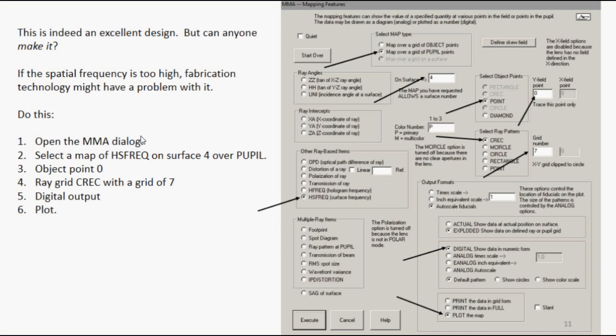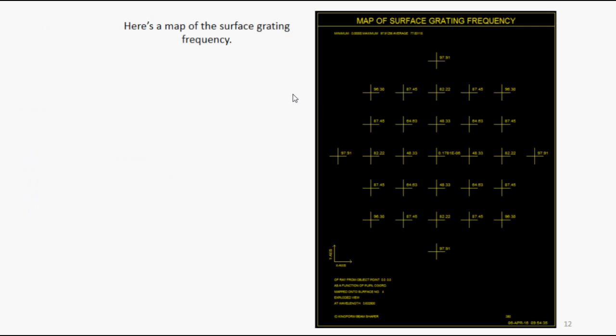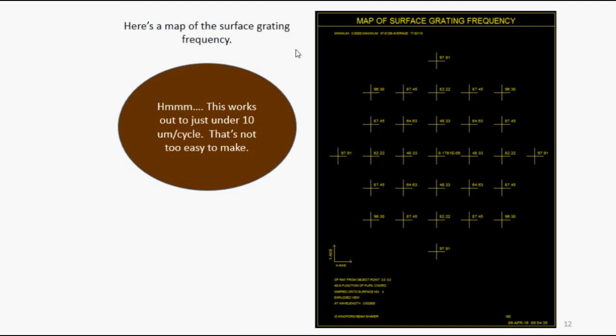But now we have to ask, can anybody make it? Because if the spatial frequency is too high, fabrication technology might have a problem with it. So we're going to use the mapping program for this. We're going to use menu mapping, MMA, opens the dialog, and you select surface frequency on surface 4, mapped over the pupil, object point 0 on axis. The ray pattern is going to be a rectangular grid confined to a circle with a grid number of 7. And you want digital output. That's one of many things the mapping program can do. And it gives you this picture. It's a map of the surface grating frequency. And look here, 97 plus cycles per millimeter. That works out to just under 10 microns per cycle, which might not be too easy to make.